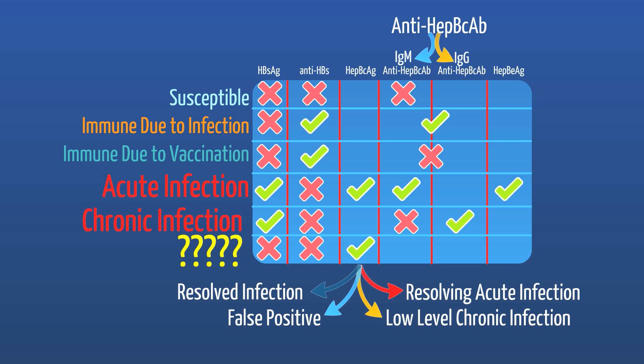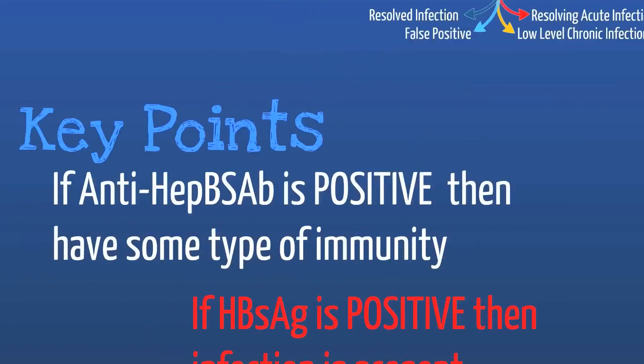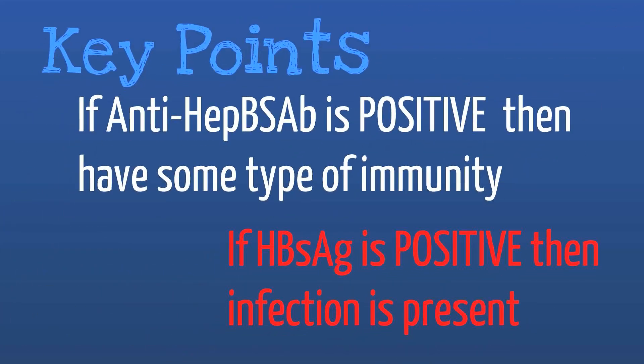The key point in interpreting hepatitis B serology is to always look at the positives and negatives in the panel. If you have surface antibody positive, you have some form of immunity. If you have surface antigen positive, there is some form of infection present.